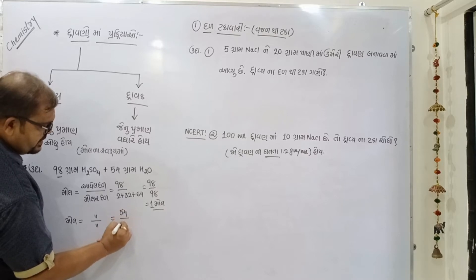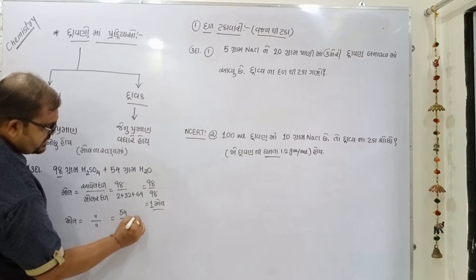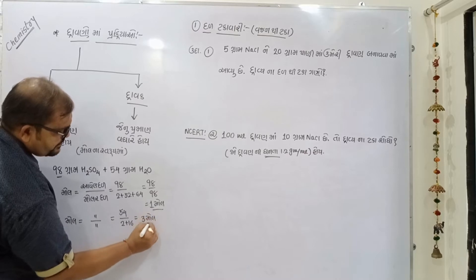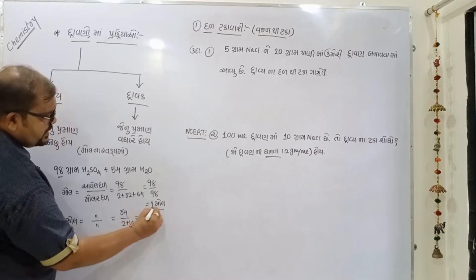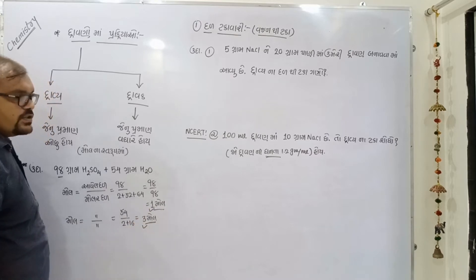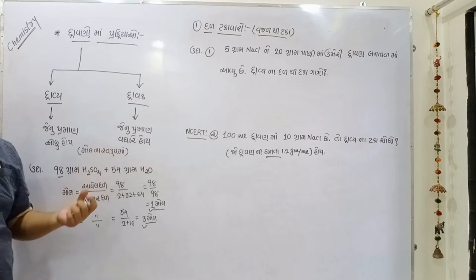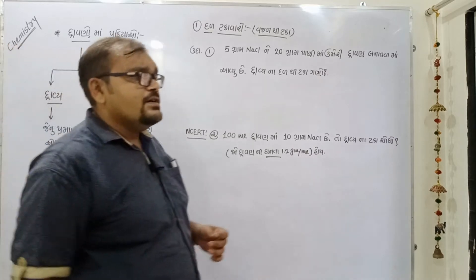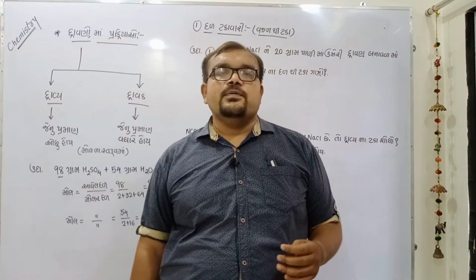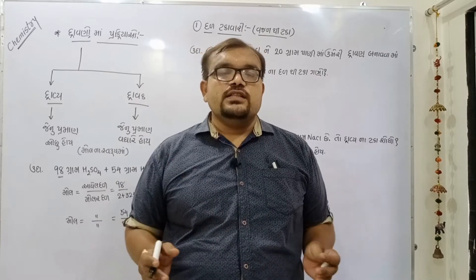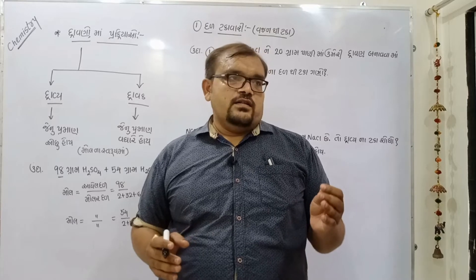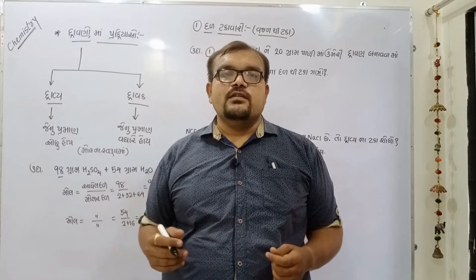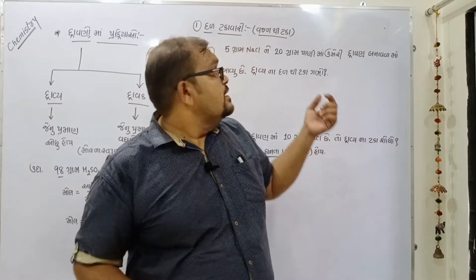જ્યારે H2SO4 દ્રાવ્ય તરીકે હોય ત્યારે — કોઈ પણ દ્રાવણ ની સાંદ્રતા અથવા દ્રાવણ ના આપેલ કદ માં પદાર્થ નો જથ્થો — આ આપણે જુદી જુદી રીત ના દર્શાવી શ કીએ. જેમ કે — દળ ટકાવારી, વજન ઘટ, મોલ અંશ, મોલારીટી અને મોલાલીટી.